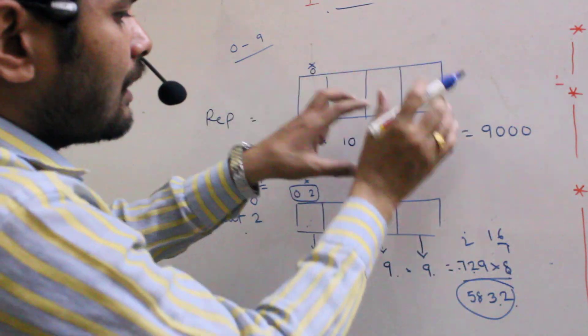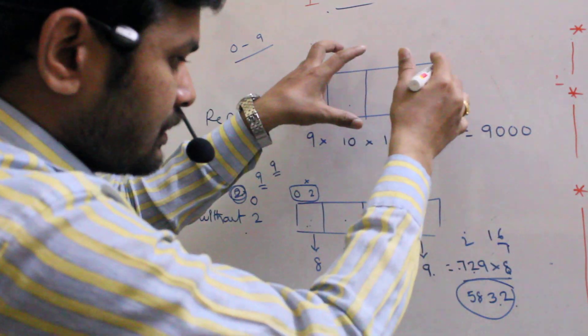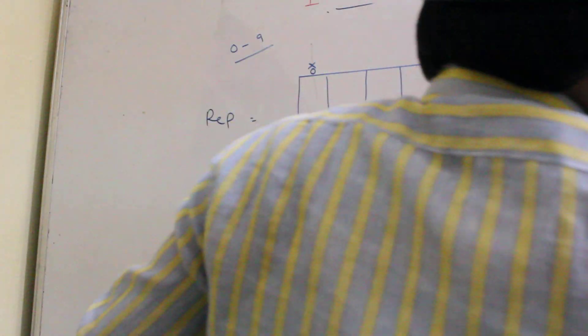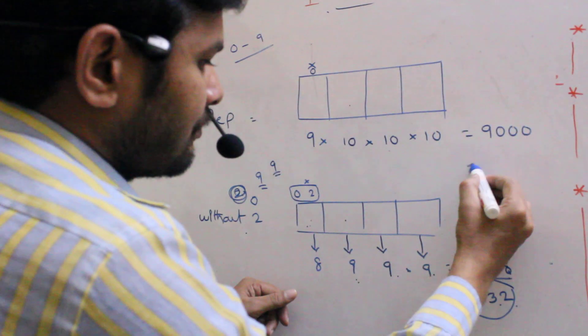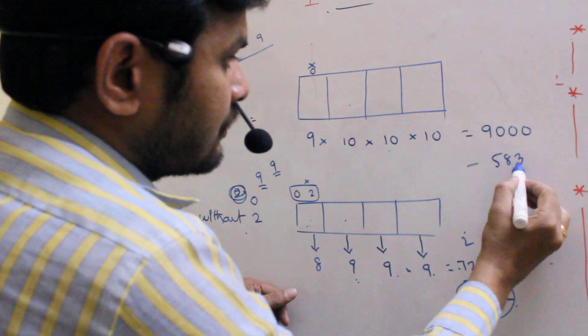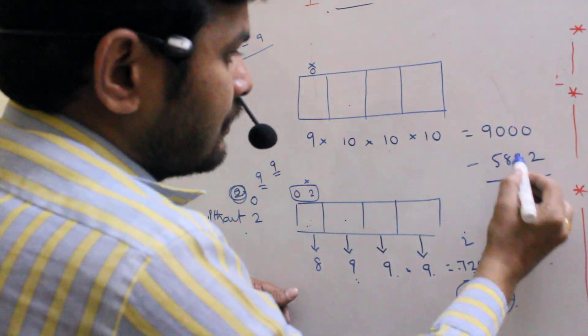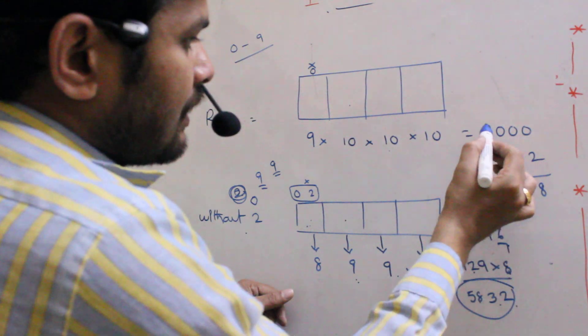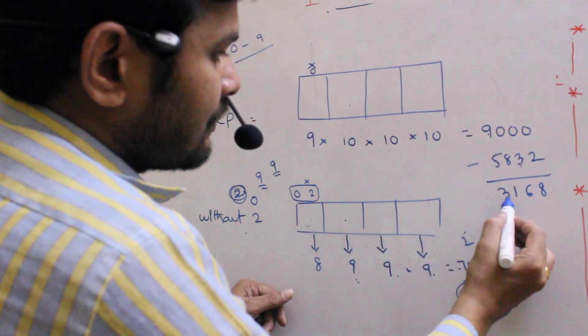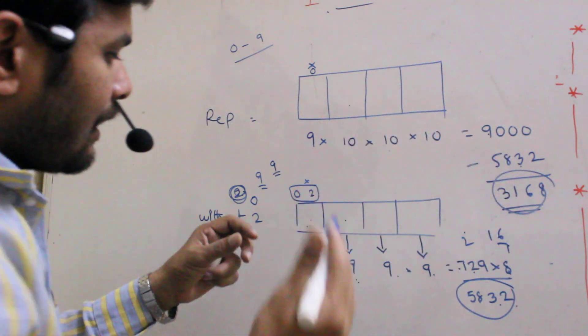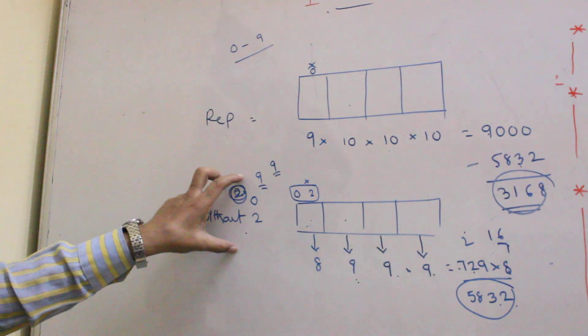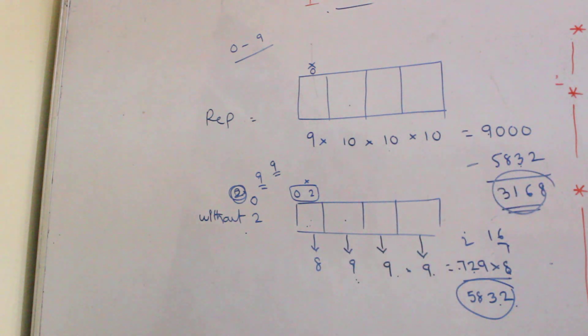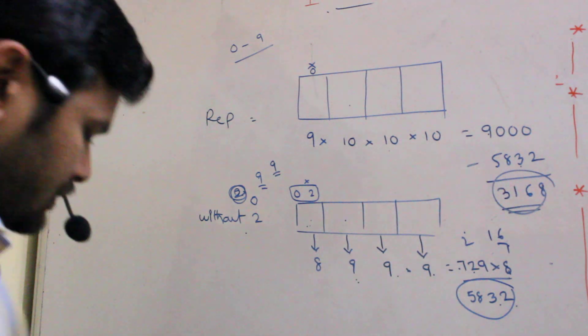This is the total number 4 digit numbers, 4 digit numbers minus without 2. That means our aim is containing 2. Minus 5832. 8, 9 minus 3, 6, 9 minus 8, 1, 8 minus 5, 3. That equals your answer. Our requirement is total variations are allowed without 2, that equals to 2 containing.